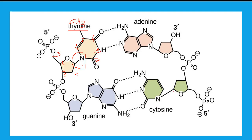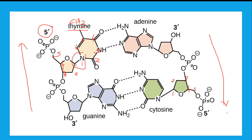One strand runs in the five prime to three prime direction. The second strand is antiparallel — five prime is at the lower side and three prime at the upper side. The carbon numbers on the opposite strand run in the opposite direction — first, second, third, fourth, fifth, sixth — and 2-oxy-4-aminopyrimidine is cytosine.